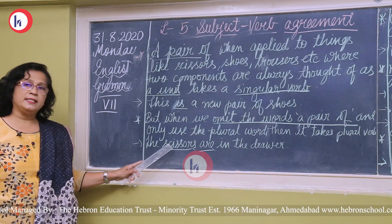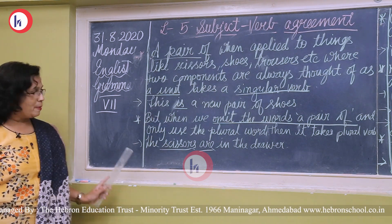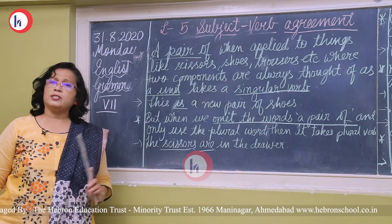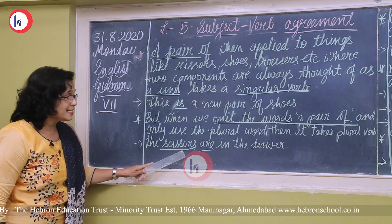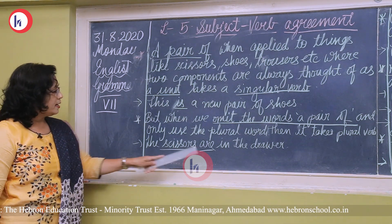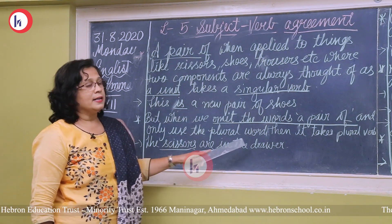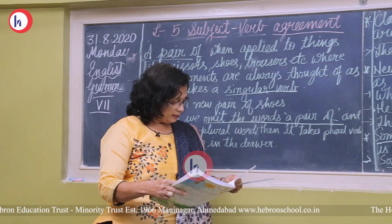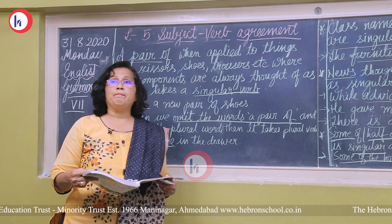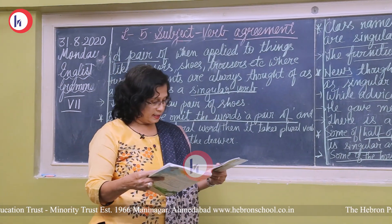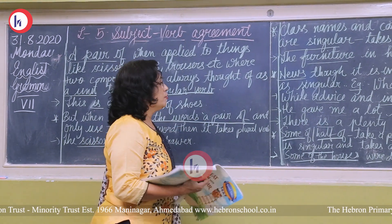When we omit 'a pair of' and use only the plural word, it takes a plural verb. For example, 'the scissors are in the drawer' — here we have omitted 'a pair of,' so 'scissors' becomes plural and takes the plural verb 'are.' Similarly: 'there was a pair of trousers in the laundry' uses a singular verb.